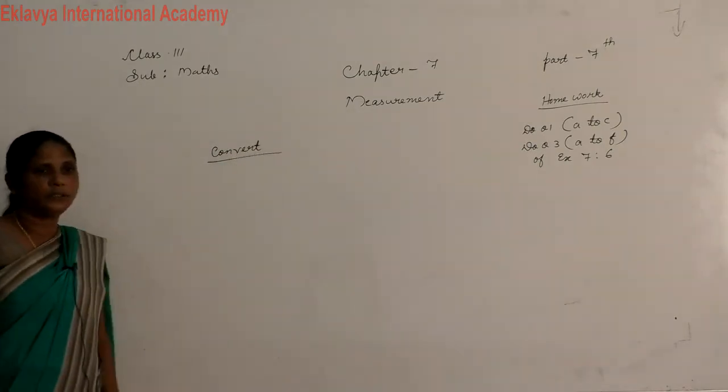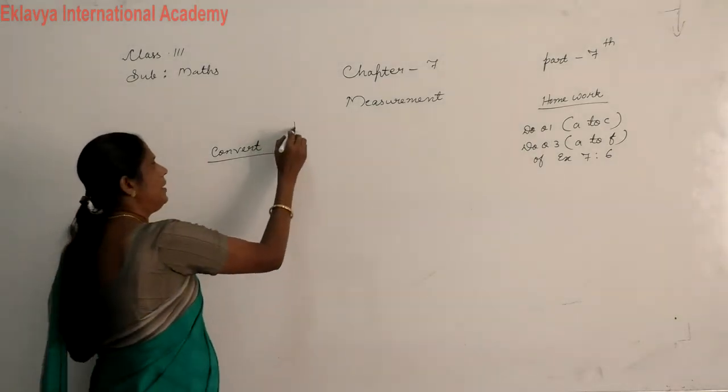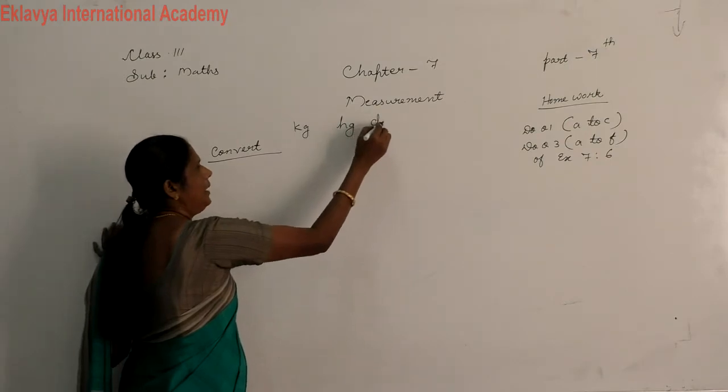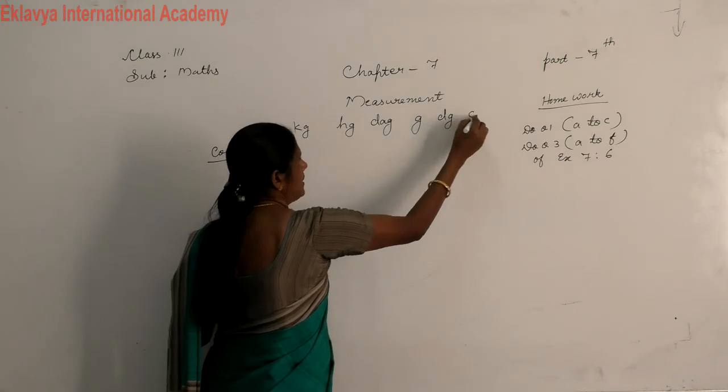First, convert. Then you know the table of years. Kilogram, hectogram, decagram, gram, decigram, centigram, milligram.